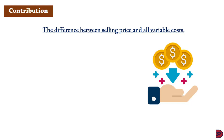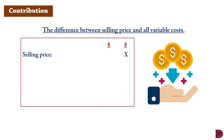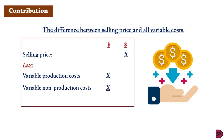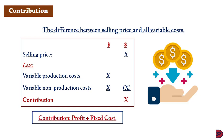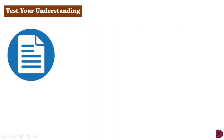Let's now talk about contribution. This is the difference between selling price and all variable costs — including both production and non-production variable costs. As an illustration: take the selling price, less variable production costs, less variable non-production costs; the result is the contribution. When you then subtract the fixed cost from the contribution, you get the profit.